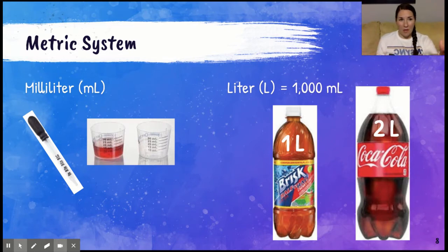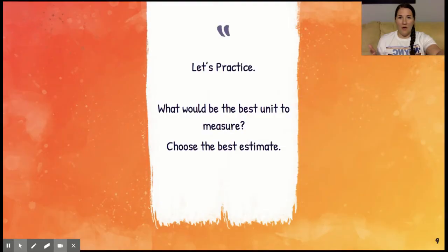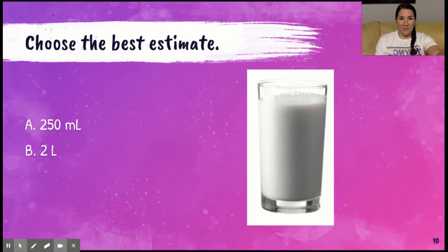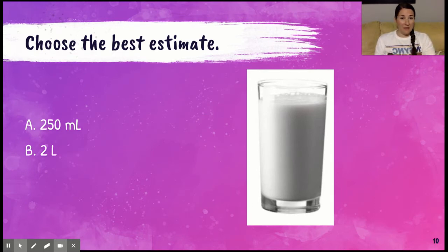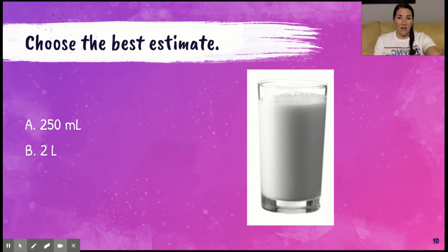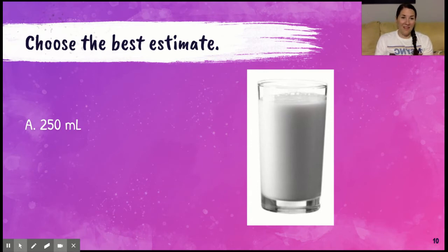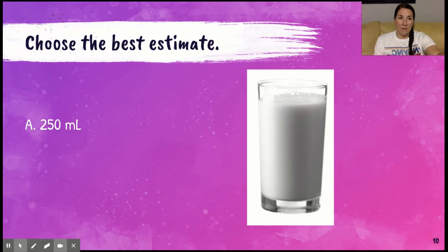Keeping those in mind, let's do a couple of examples of what measurement would be best in the metric system. Looking at a glass of milk — would it be better to say that's about 250 milliliters or two liters? I'm going to say 250 milliliters. If I think about a two-liter of Coke, that's way more than a glass of liquid — I can get several glasses of Coke out of a two-liter. So 250 milliliters would probably be about right.